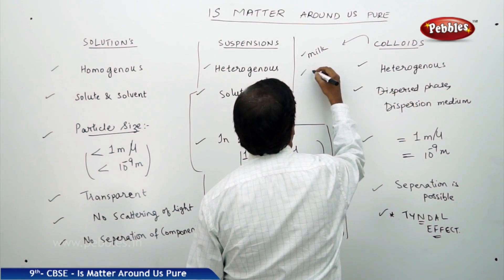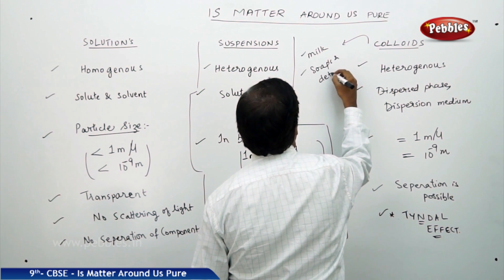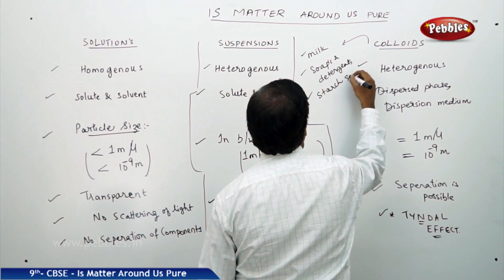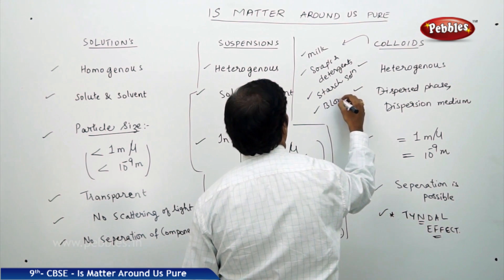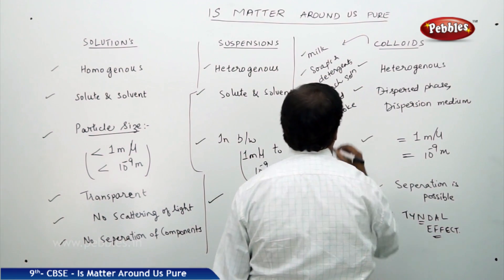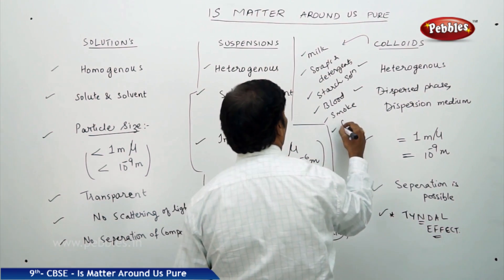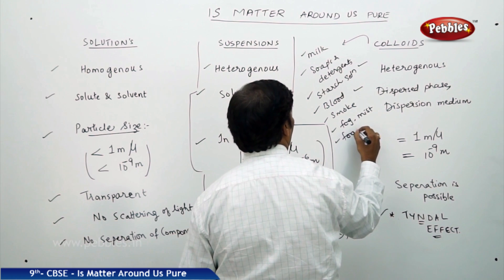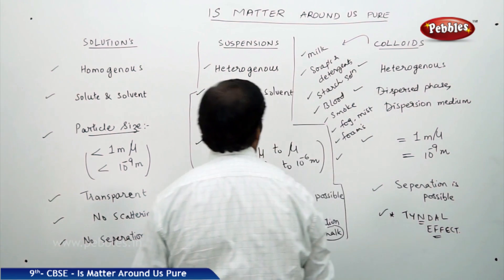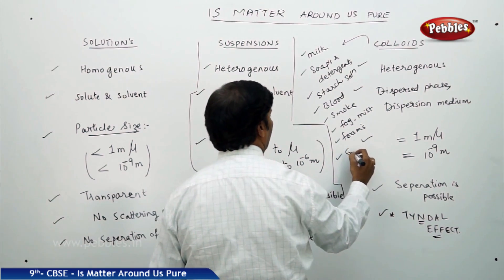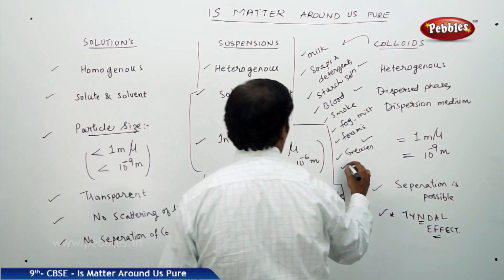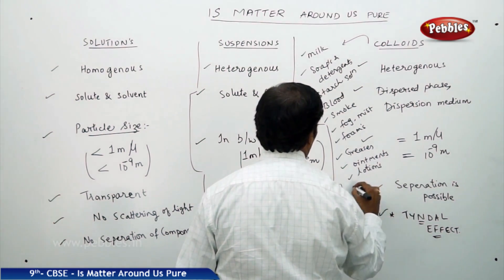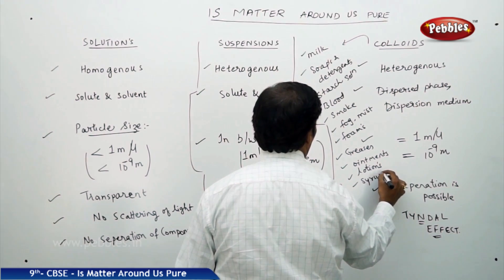Examples of colloids include: milk, soaps and detergents, starch solution, blood, smoke, fog, mist, foams, greases, ointments, lotions, and syrups — all these are different types of colloids.